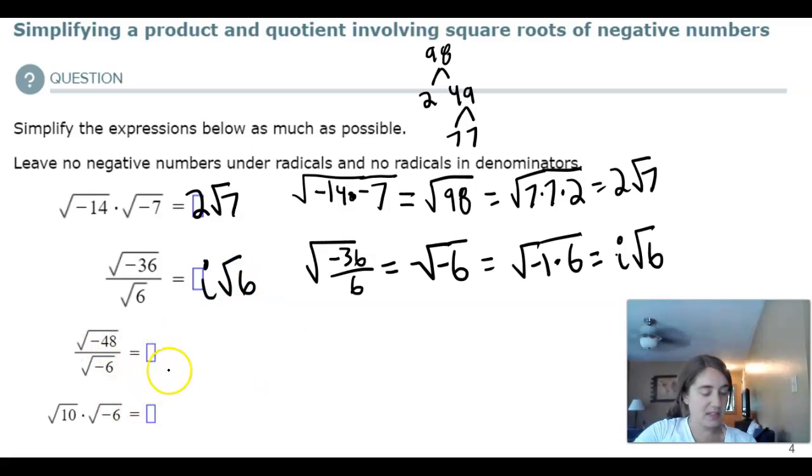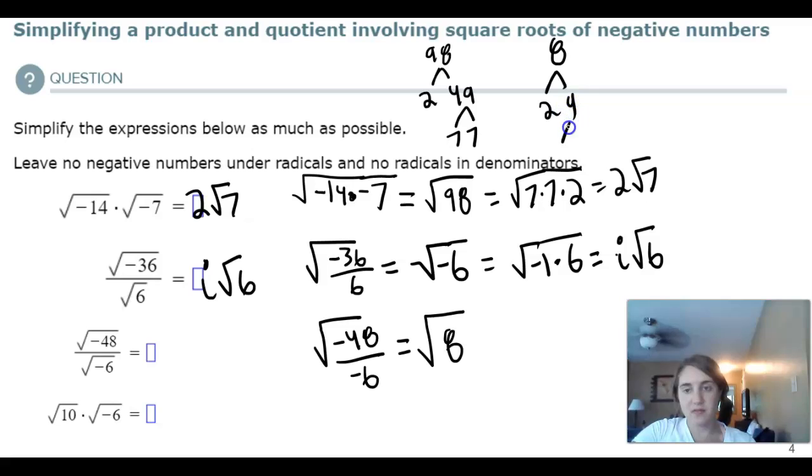We'd have the same idea here. Negative 48 divided by negative 6 equals square root of 8, which equals 2 times 2 times 2. Or just 2 square root of 2.